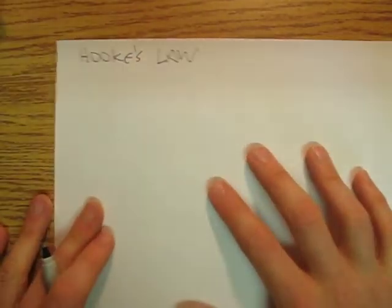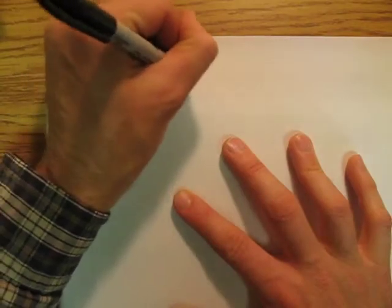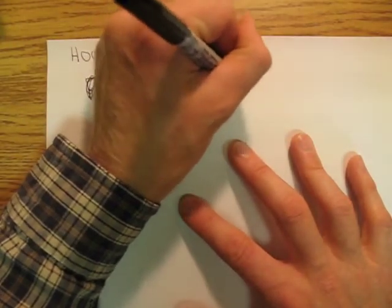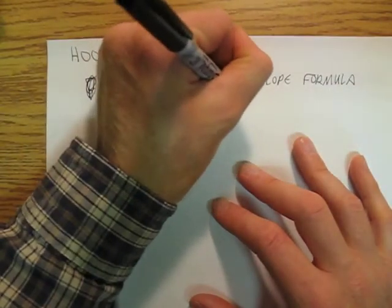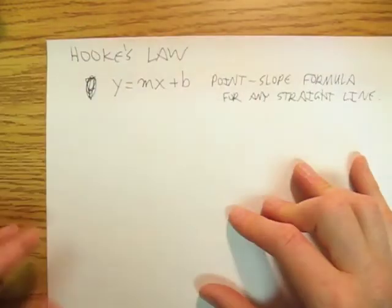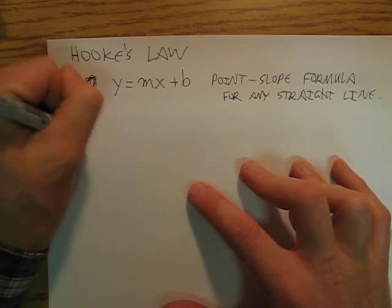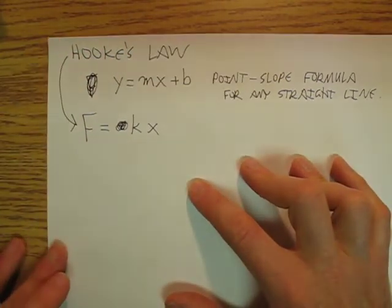Hooke's Law is going to be the equation for a line. The general equation for a line is y equals mx plus b — that's just the point-slope formula for any straight line. So Hooke's Law is F equals negative kx, but I'm just going to say F equals kx.